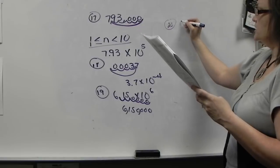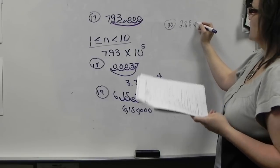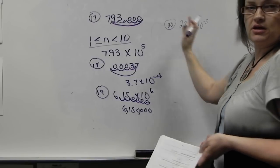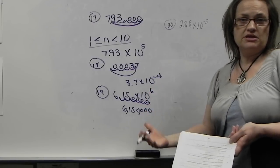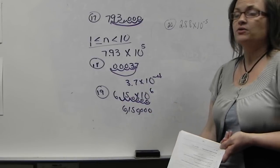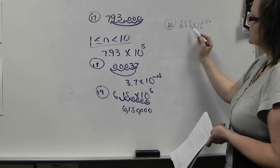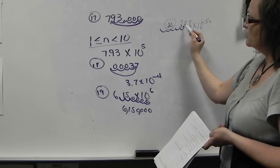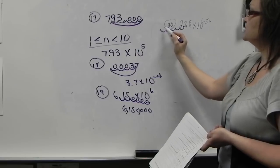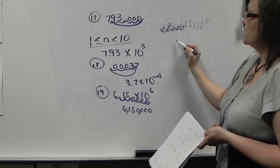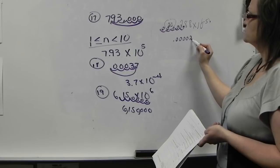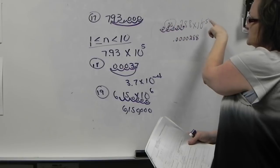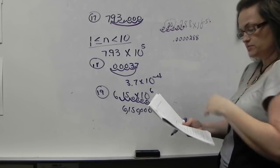Number 20 is another one similar to that, only we have a negative exponent. If you check 10 to the negative fifth, it's like dividing — just like earlier when we talked about negative exponents, it basically means division, you put it down in the denominator. So because it's a negative exponent, it moves the decimal the other way: 1, 2, 3, 4, 5 places. Counting from wherever your decimal is, 5 places back adds in 4 zeros. That result is considered decimal notation, whereas the original was scientific notation.